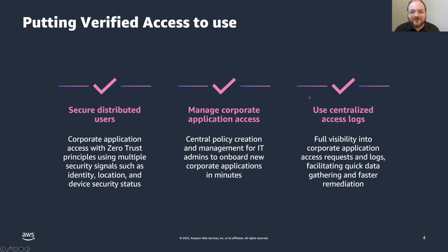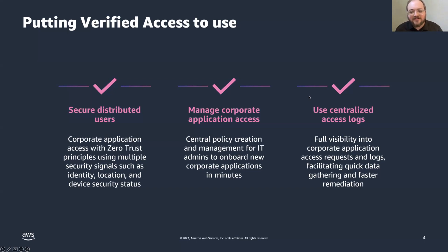Instead of fine-tuning multiple policies across different layers of protection, like you might have done in a more traditional approach, you simply update the policy in Verified Access centrally, and that reflects the new requirements to access your applications, whether that's one application or a group of applications. And next, you can accelerate your time to troubleshoot any issues. With Verified Access, each access request is evaluated and then it's logged, including all the security signal input that was included in that request to help authorize or deny it. This gives you the visibility to respond to events and more quickly resolve any issues with your connectivity to your applications.